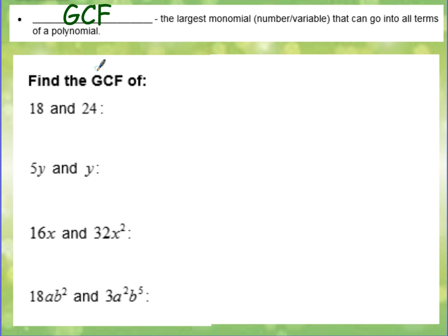Now we're going to work a little bit more with something called the GCF. Remember that this stands for the greatest common factor. This means that this is the largest monomial, a combination of some number and a variable, that can go into all terms of a polynomial. So we are going to practice identifying the GCF.